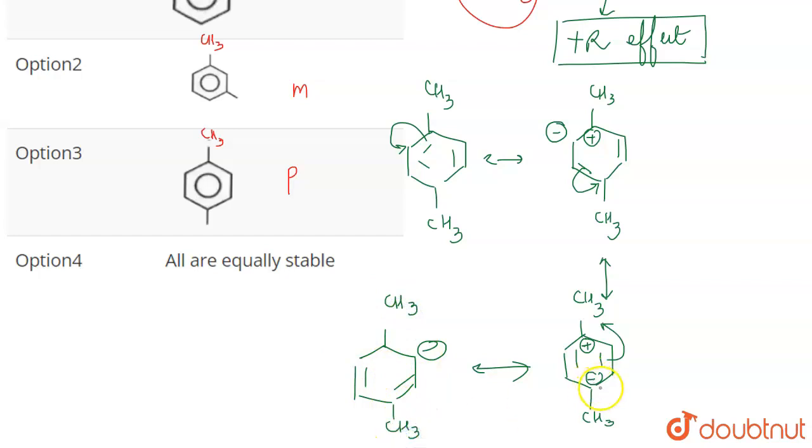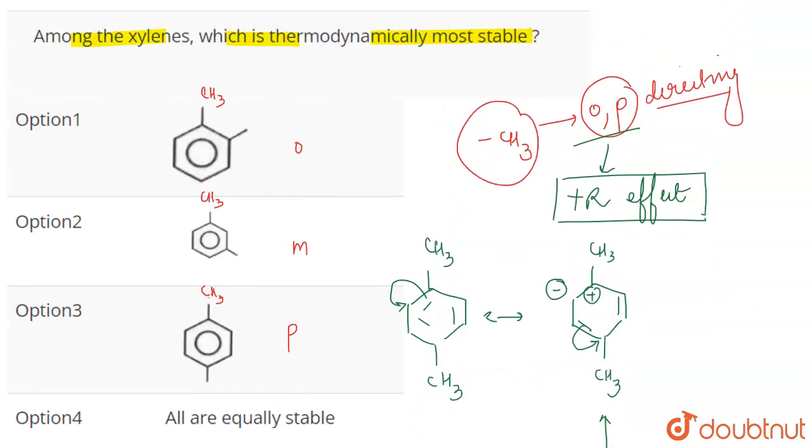So as the negative charge is there at the ortho and para position - now we have drawn the resonating structures for para, you can also draw for ortho, they'll be the same. We will be having negative charge on the ortho and the para position, whereas that does not happen in the case of meta xylene.